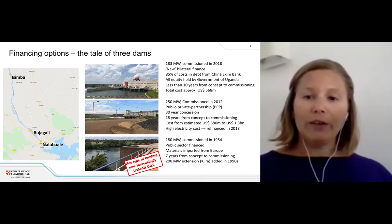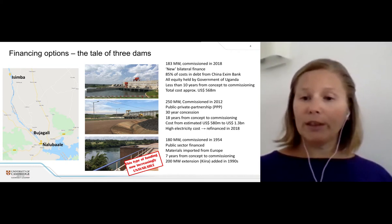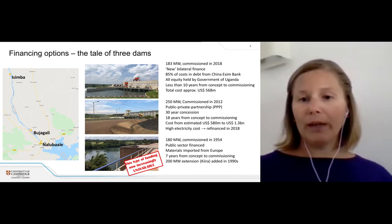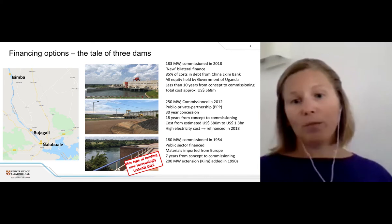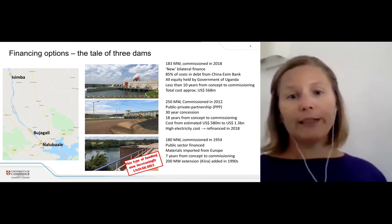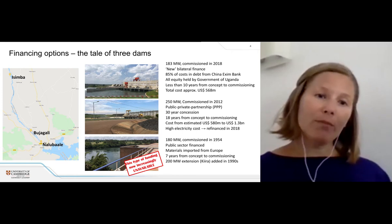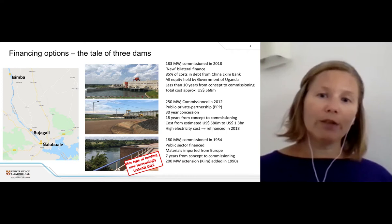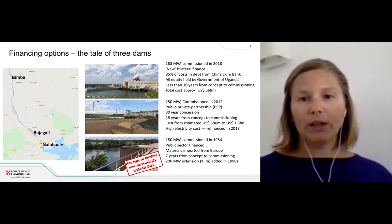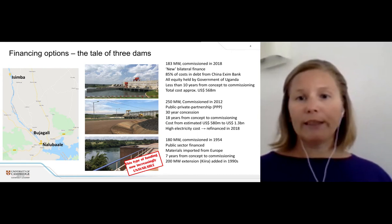When the Kiira addition was made, primarily with funding from the World Bank, the original Nalubaale station was extended from 150 megawatts to 180. Moving up the river, the second dam is Bujagali — about 10 kilometers down the river from Nalubaale. At 250 megawatts, it was commissioned in 2012.